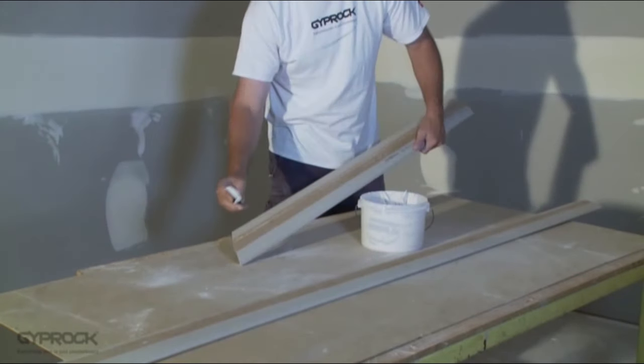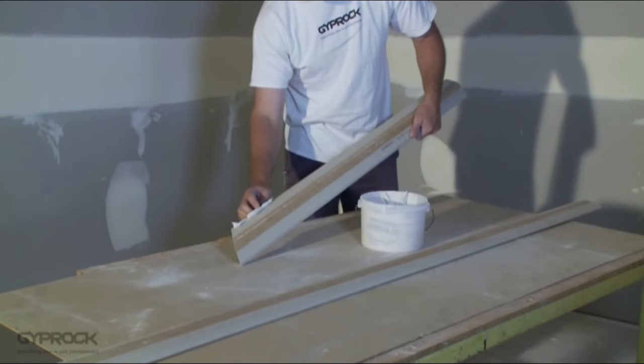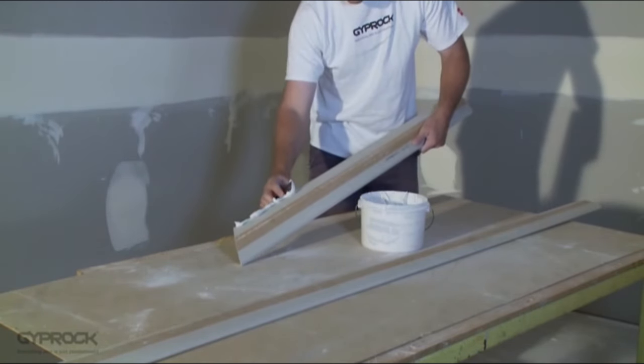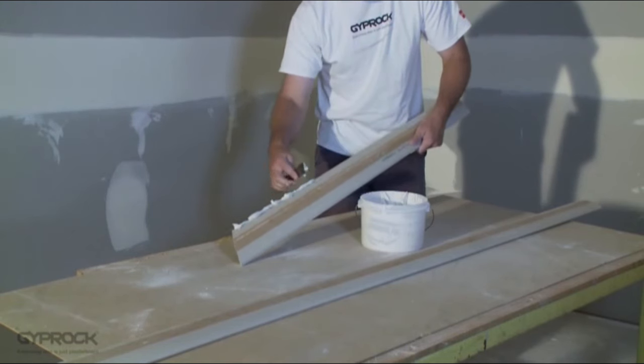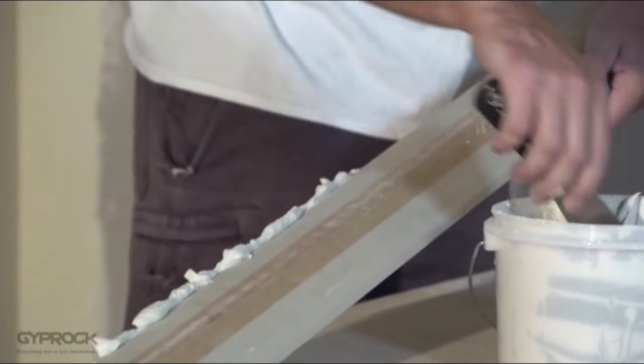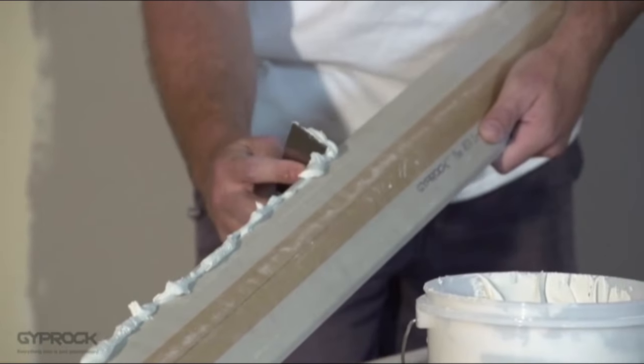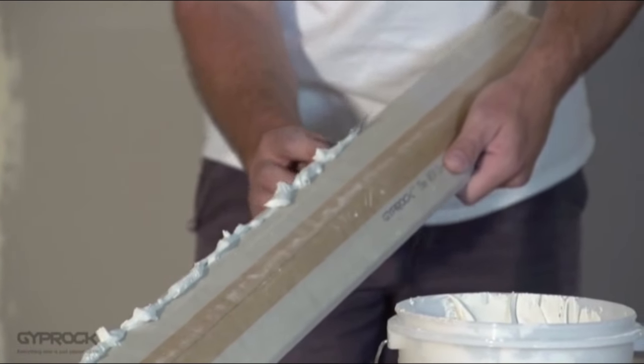Once it's mixed the cornice cement working life is around 60 minutes so only mix what you think you can use in that time. Working on one piece at a time and starting with the shorter lengths butter the corners by applying a 10mm thick bead of corner cement to the back of each edge using a broad knife.